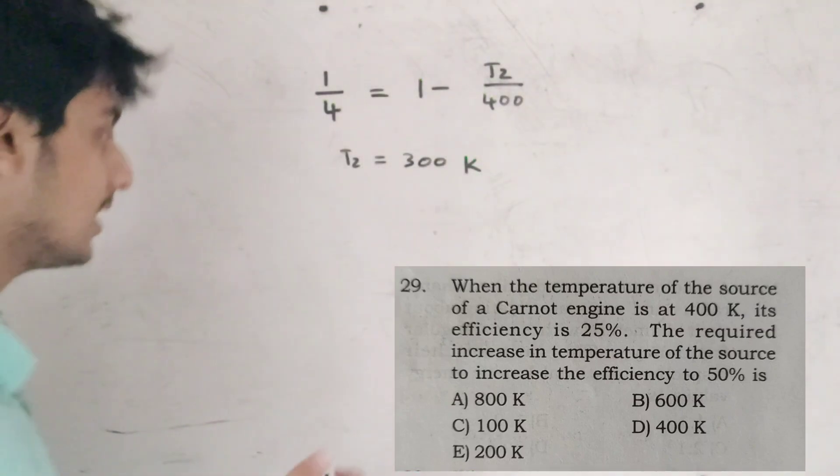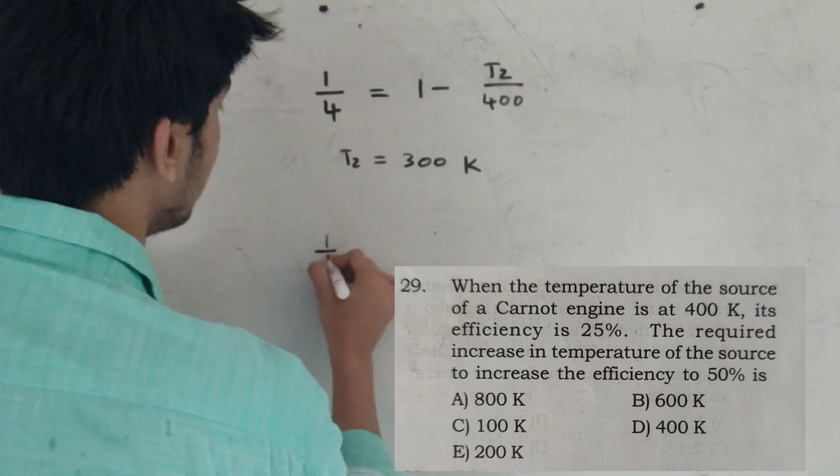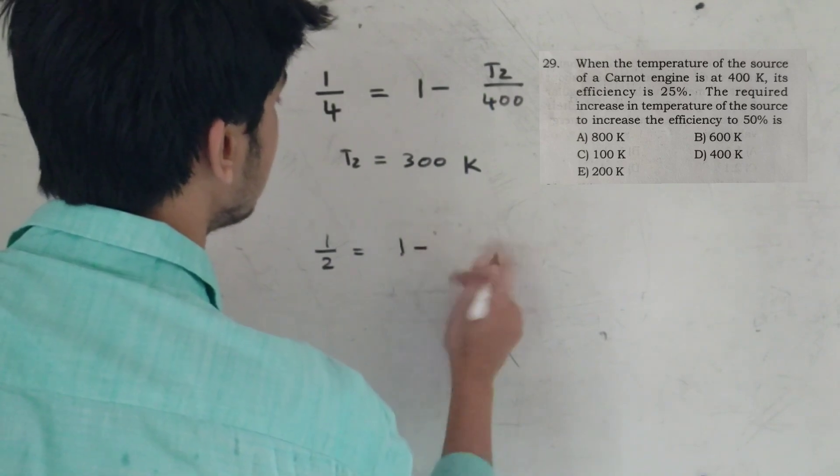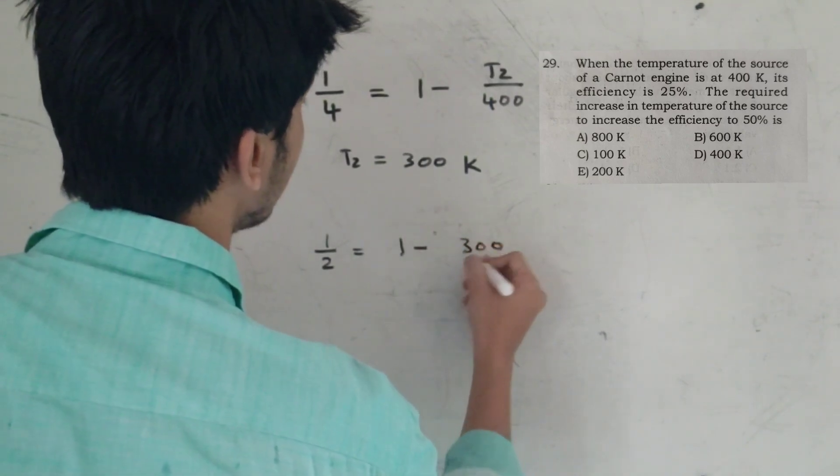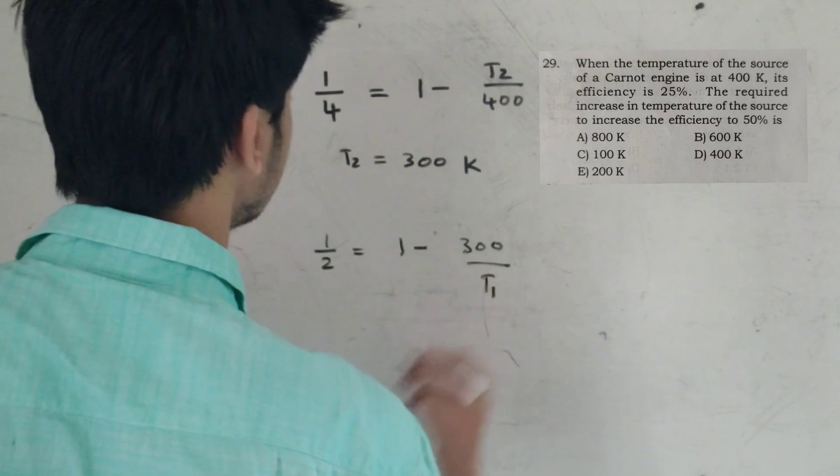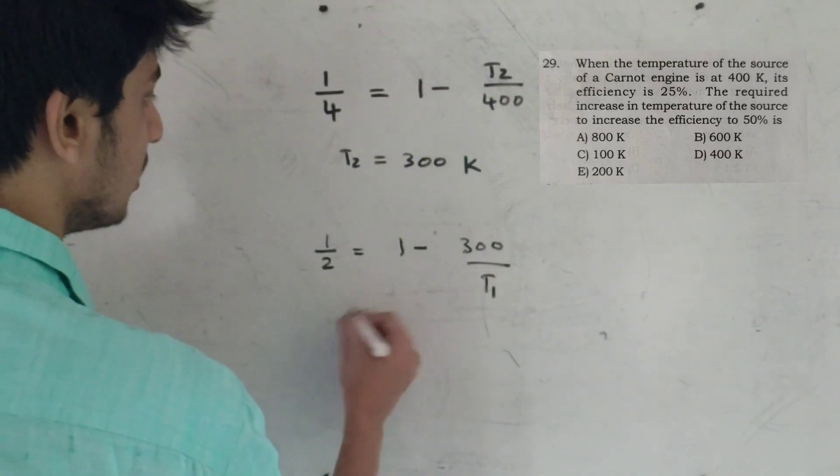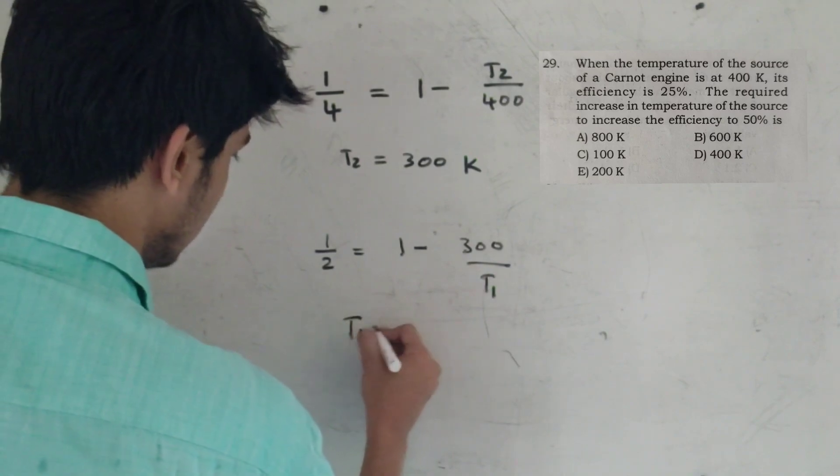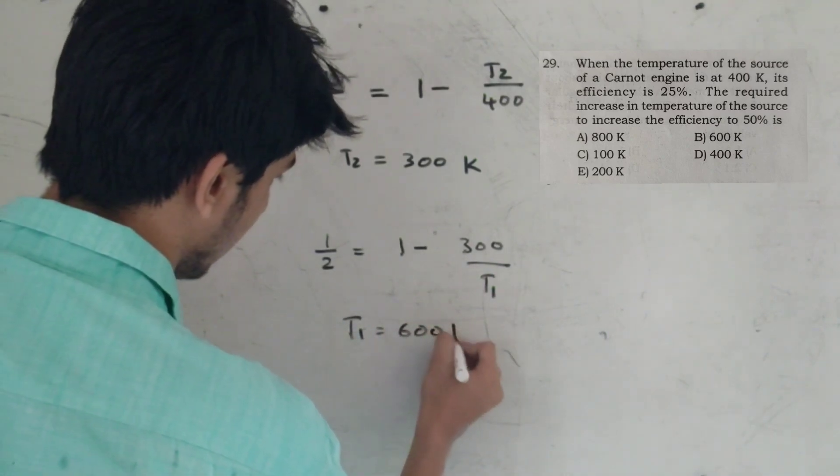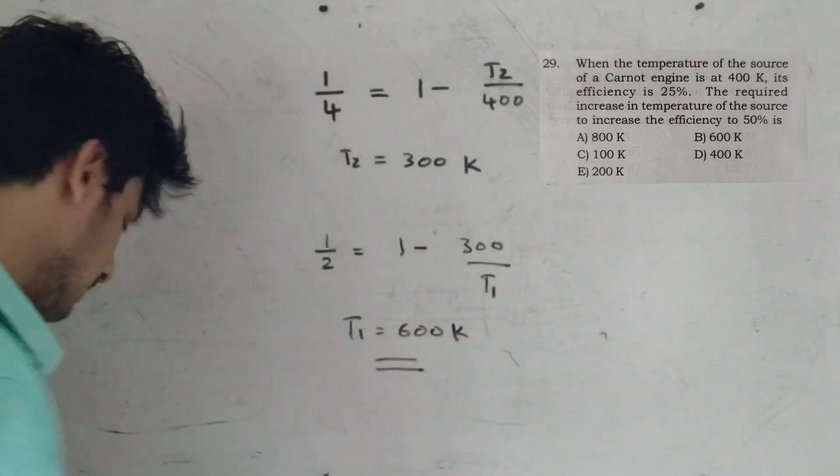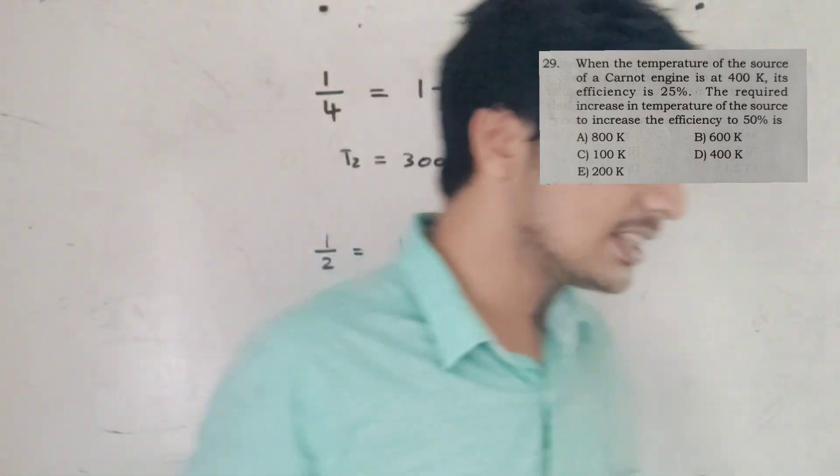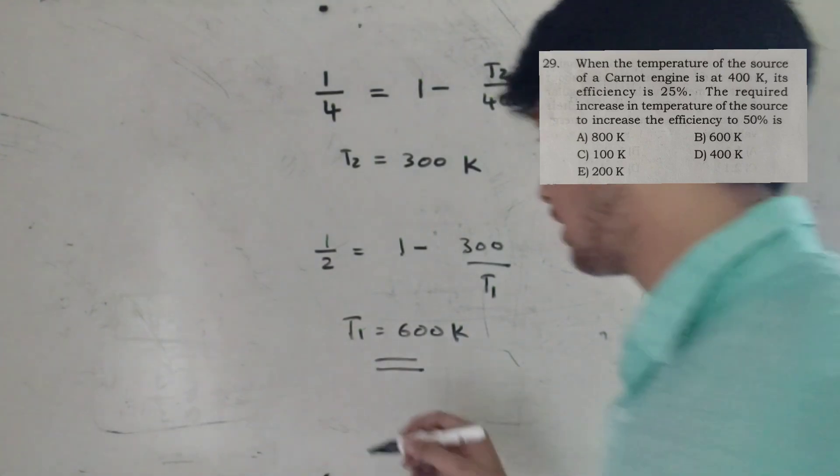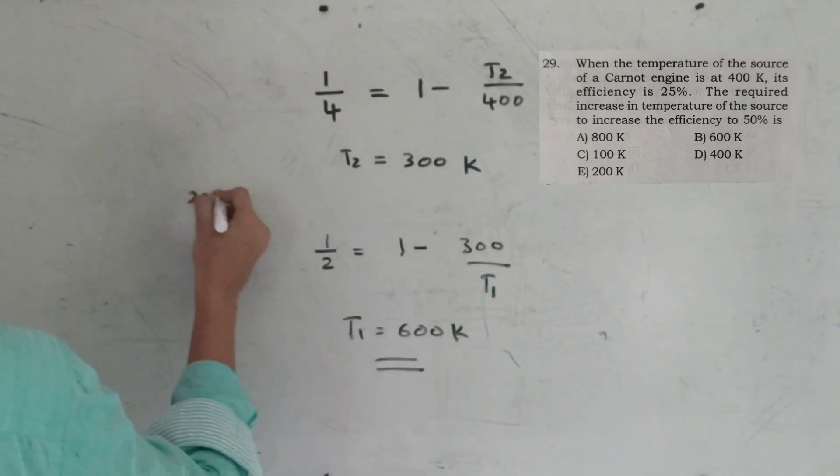In that case, the efficiency is 50%, that is 1 by 2. Then 1 minus T2 by T1. T2 equals 300 Kelvin. T1 equals 600 Kelvin. So the increase is 200 Kelvin.